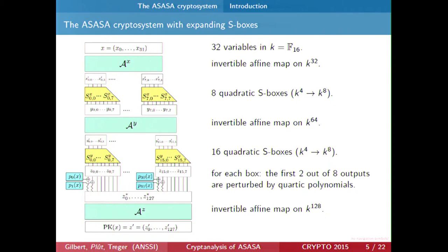How do they do this exactly? They start with the finite field F16, with 16 elements, and 32 elements of this field, which they first mix with an affine layer. Then they split into eight S-boxes, each taking four elements as input and outputting eight — getting 64 elements instead of 32. They then apply 16 S-boxes, also four-to-eight, getting 128 elements. The first two outputs of each S-box are absorbed with perturbation polynomials, which are pseudo-random polynomials of degree four, yielding 122 outputs. Then comes the final affine layer, and the public key is the output.